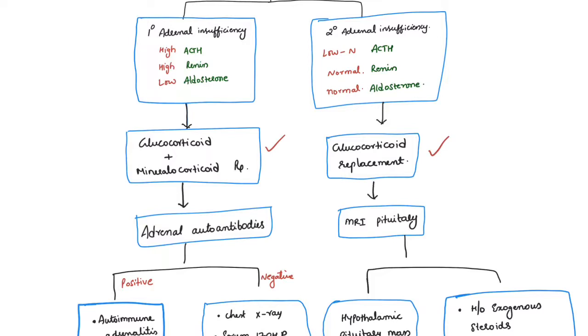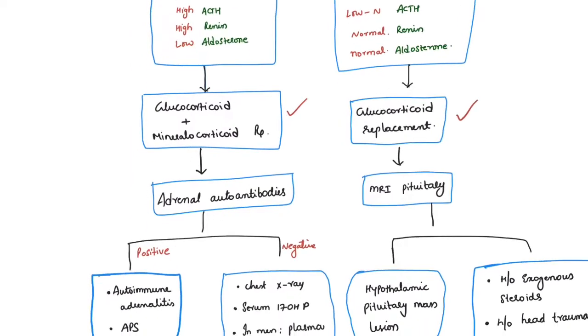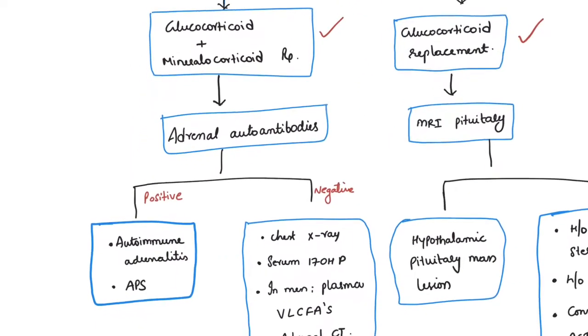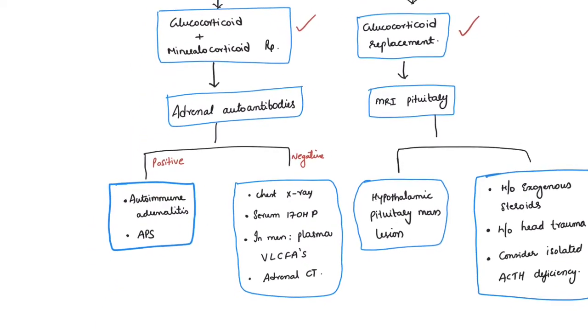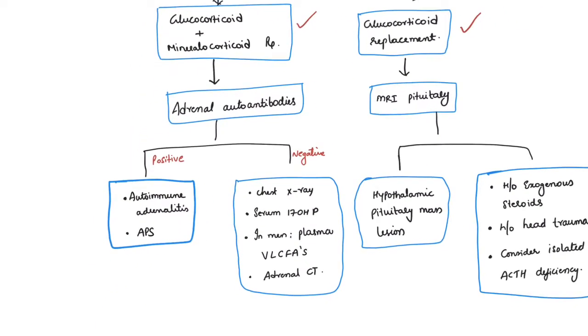Once primary adrenal insufficiency is confirmed, the next immediate step is replacement of both glucocorticoids and mineralocorticoids. Whereas in secondary adrenal insufficiency, the ACTH could be low to normal, renin levels are normal, and aldosterone levels are also normal — and we need to replace only the glucocorticoid; there is no need to replace mineralocorticoids in secondary adrenal insufficiency.